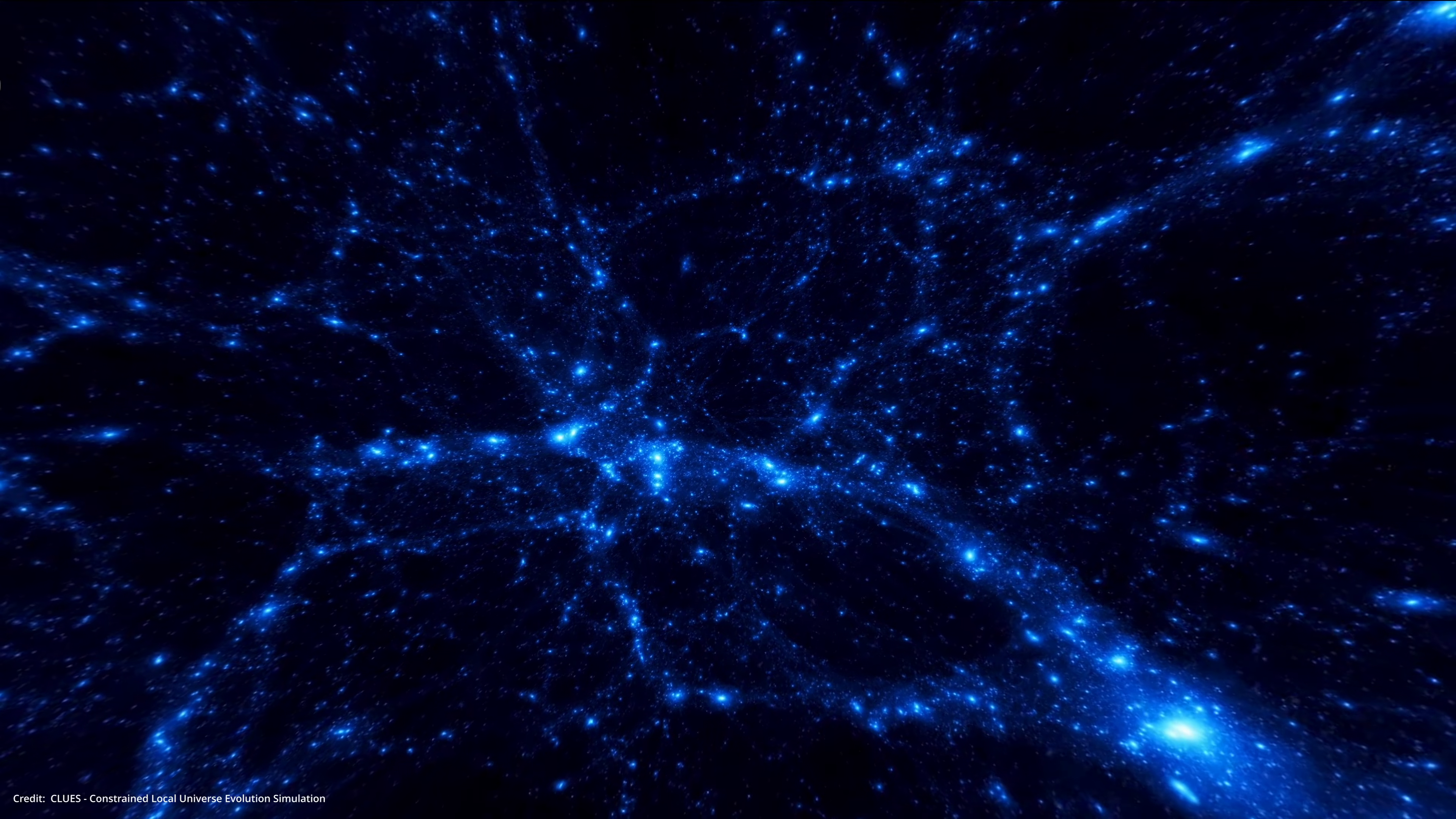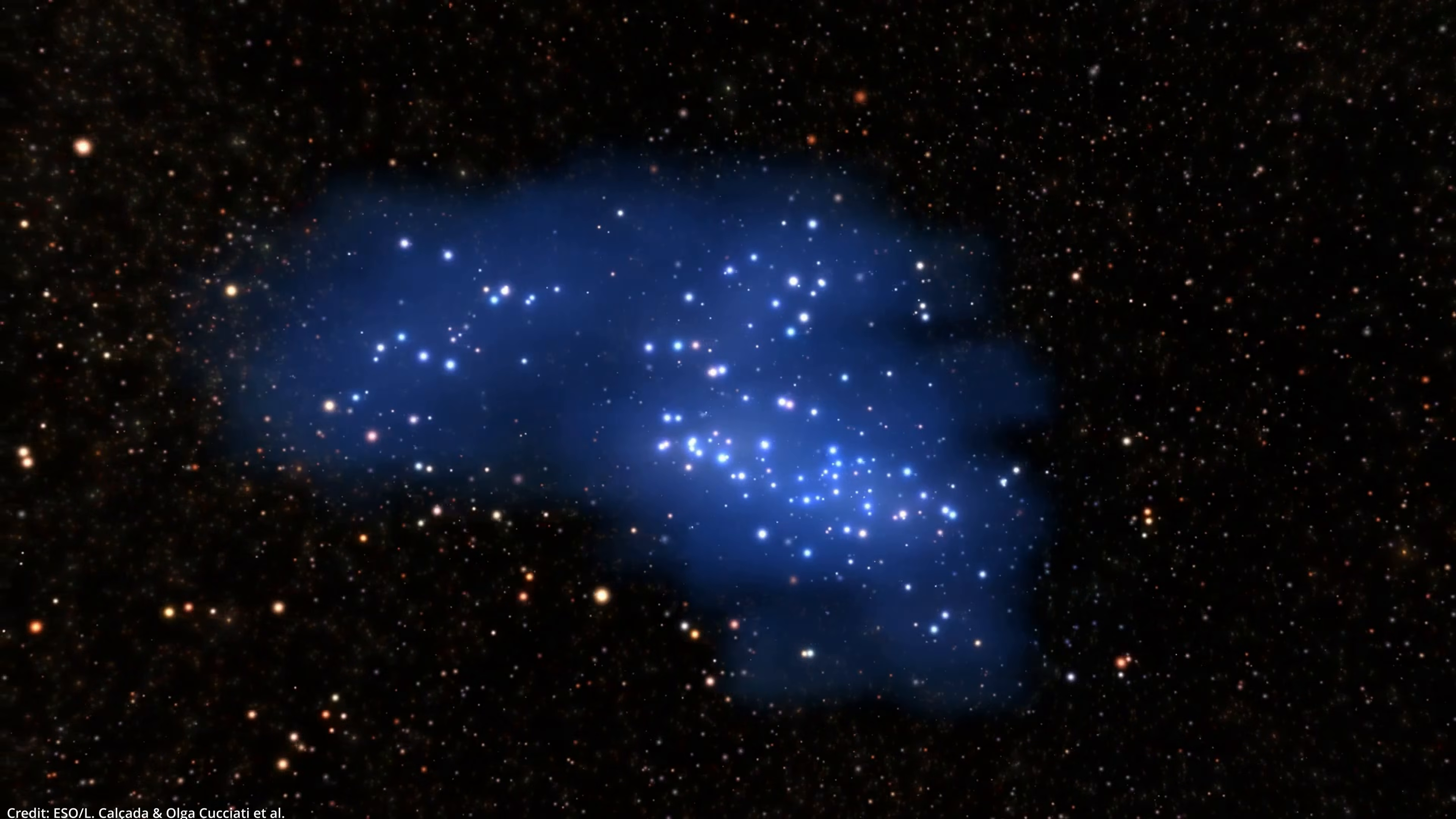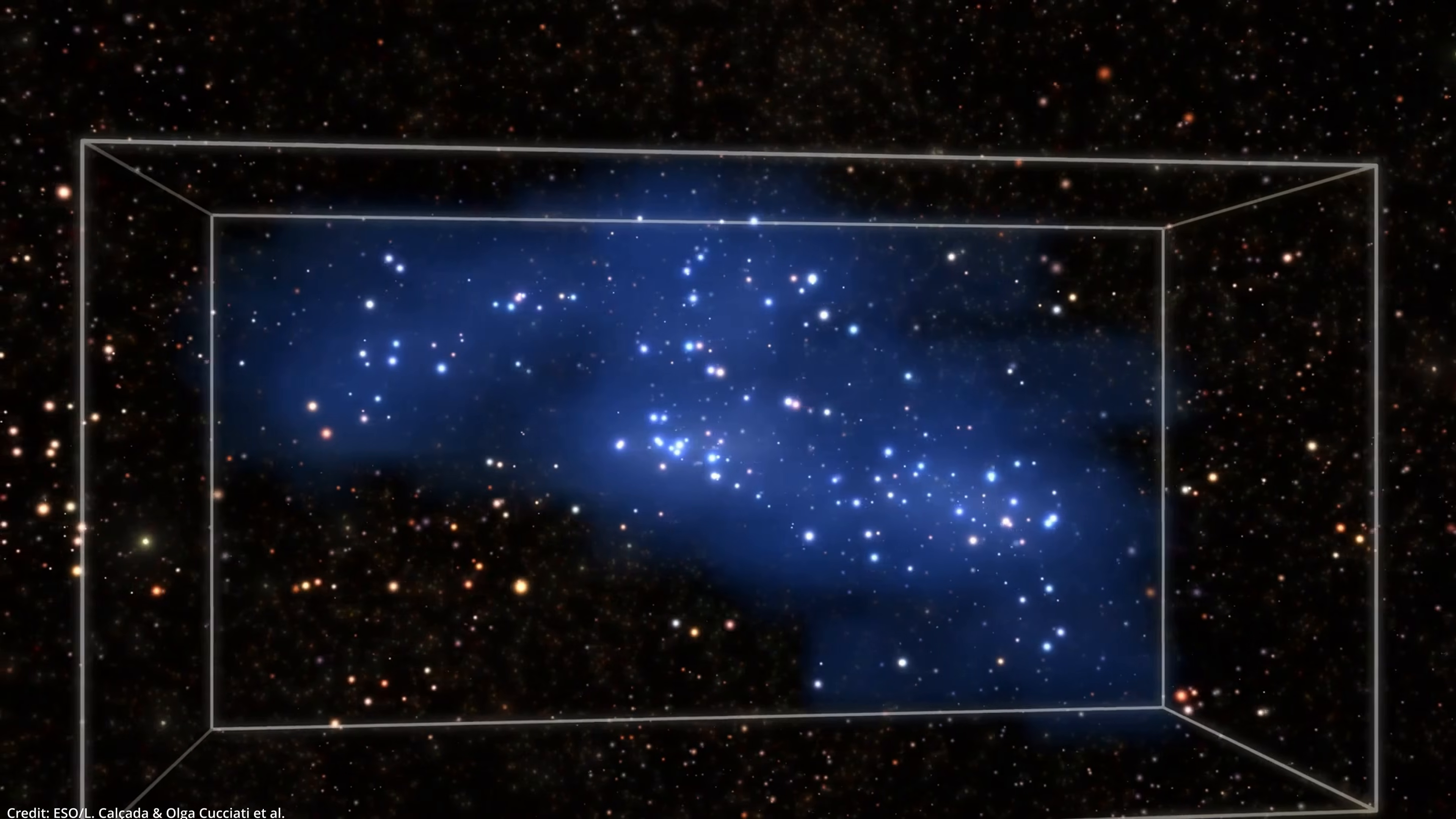The Quipu superstructure. Quipu's discovery was not in isolation. Astronomers also identified four other colossal formations, the Shapley supercluster, Serpens Corona Borealis, Hercules and Sculptor Pegasus superclusters. Together with Quipu, these giants account for 45% of galaxy clusters and 25% of the universe's tangible matter.